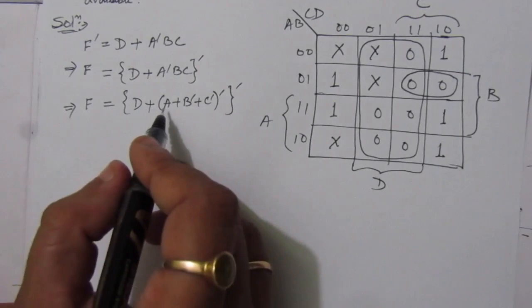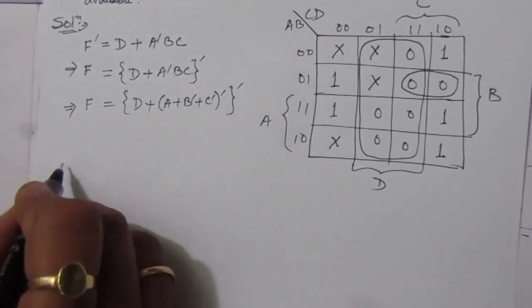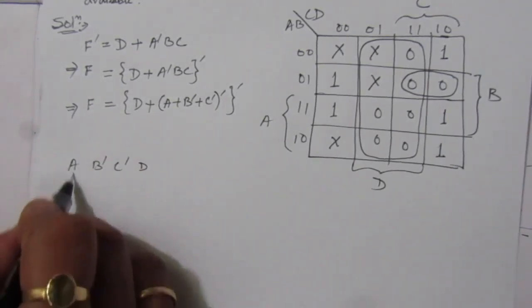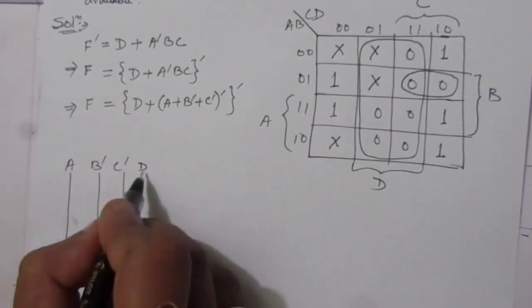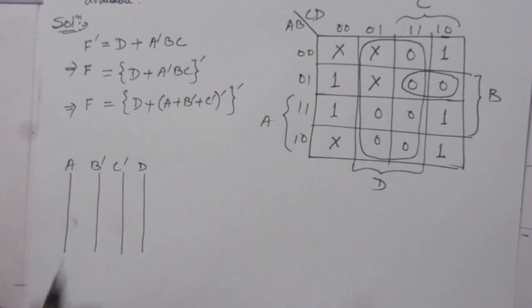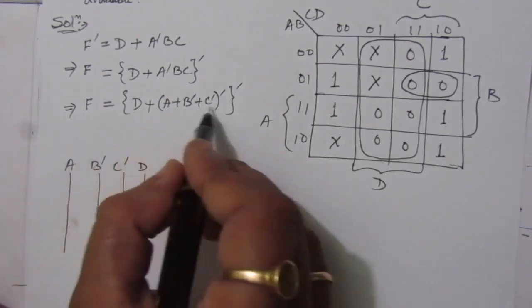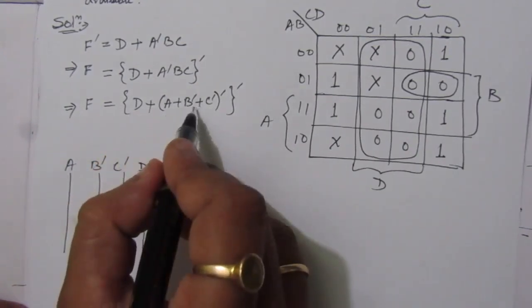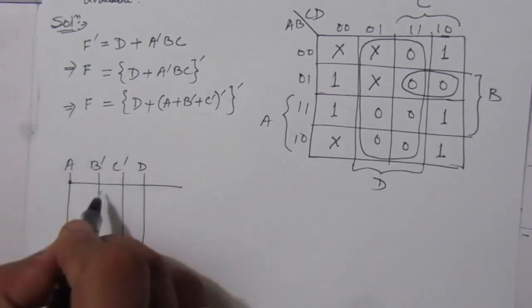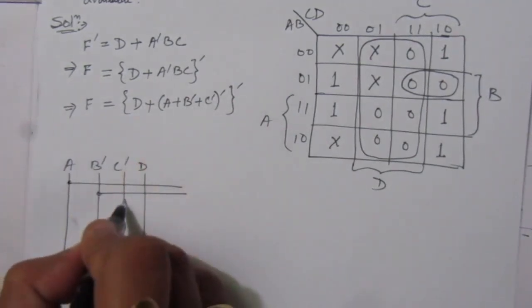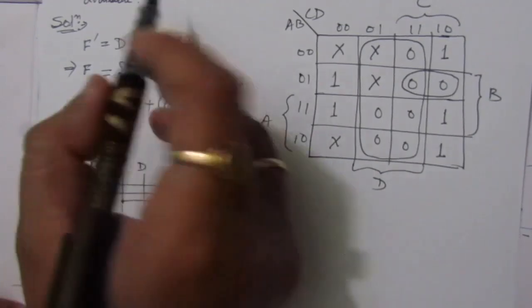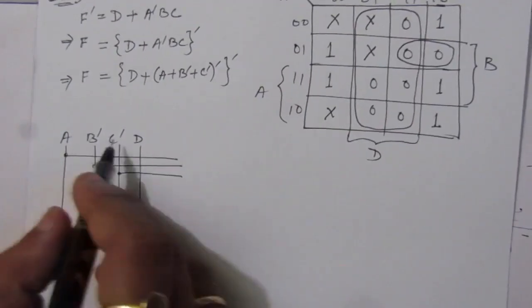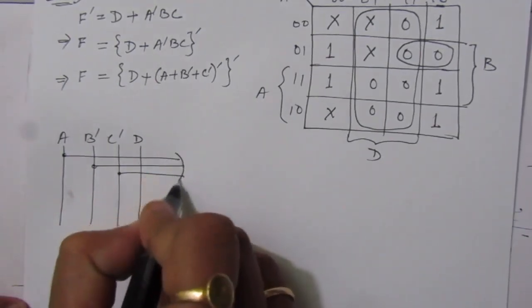We have input A, B bar, C bar, and D. So we will have four input lines: A, B bar, C bar, and D. First of all, we will make this term, because we have to use this term to add with D. A plus B bar plus C bar. We can directly give this input because in the question it is given: assume both the normal and complement inputs are available. So we made available these complemented inputs, B bar and C bar.